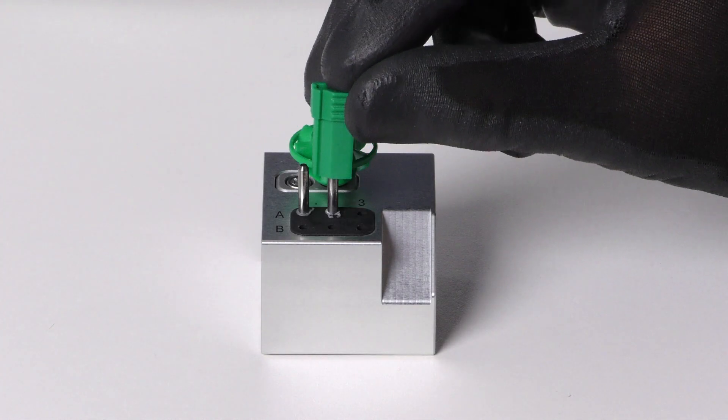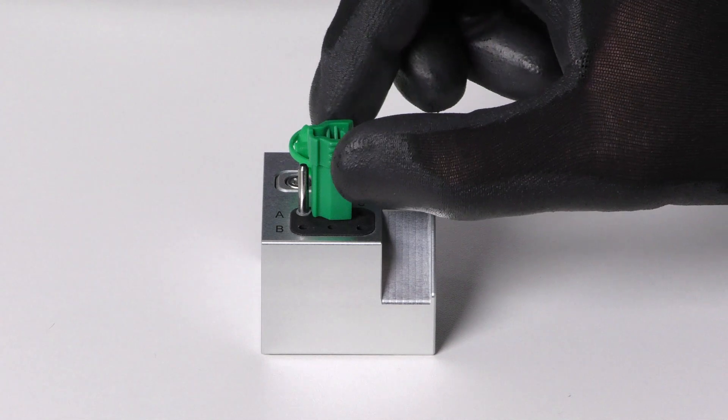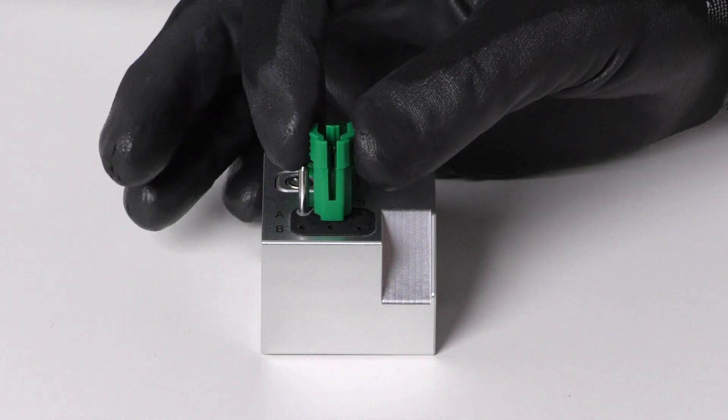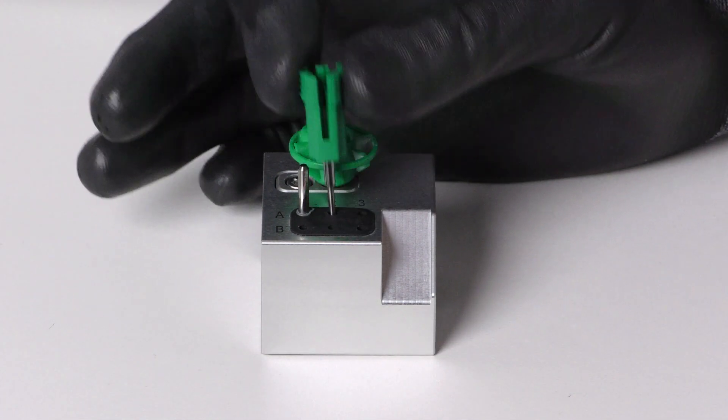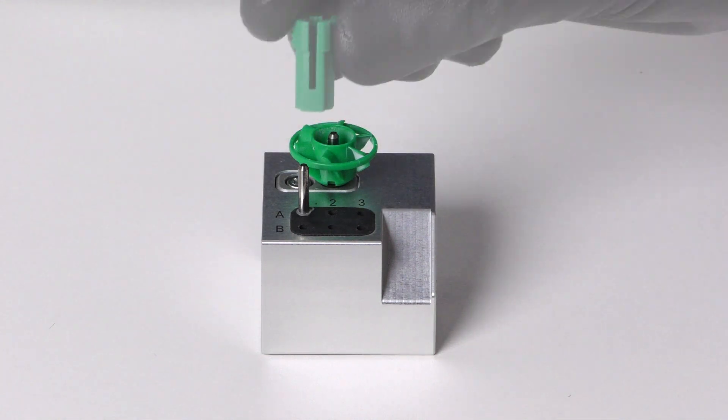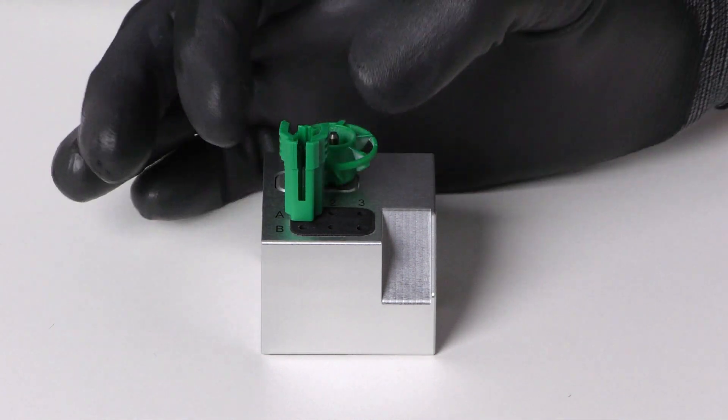To remove a tool, pull it upwards out of the tool magazine. Depending on whether you place the tool back in your inventory or no longer use the tool type, configure Dental CNC accordingly.